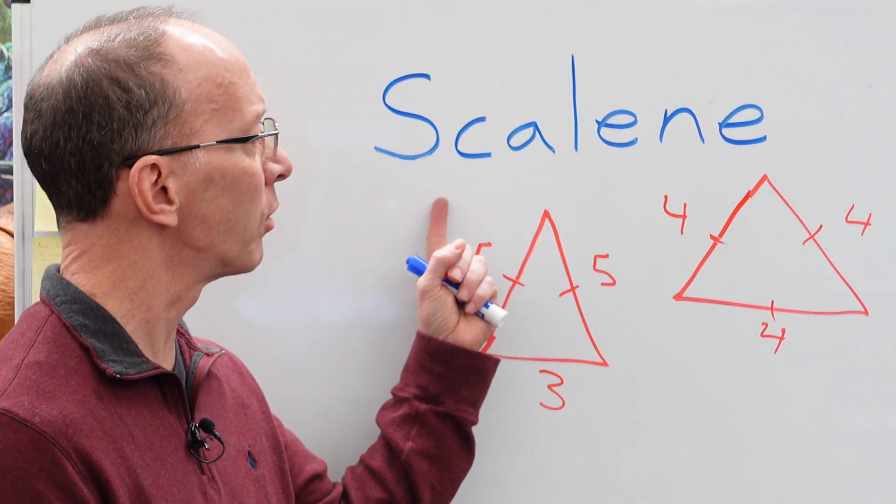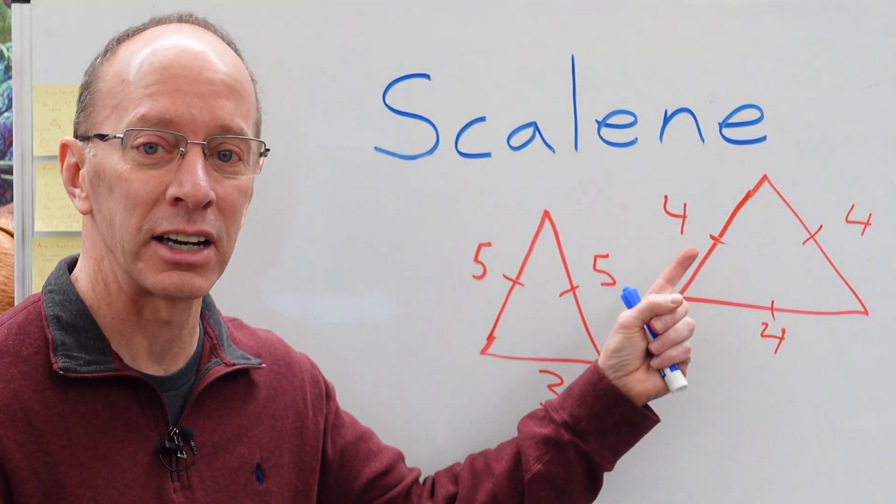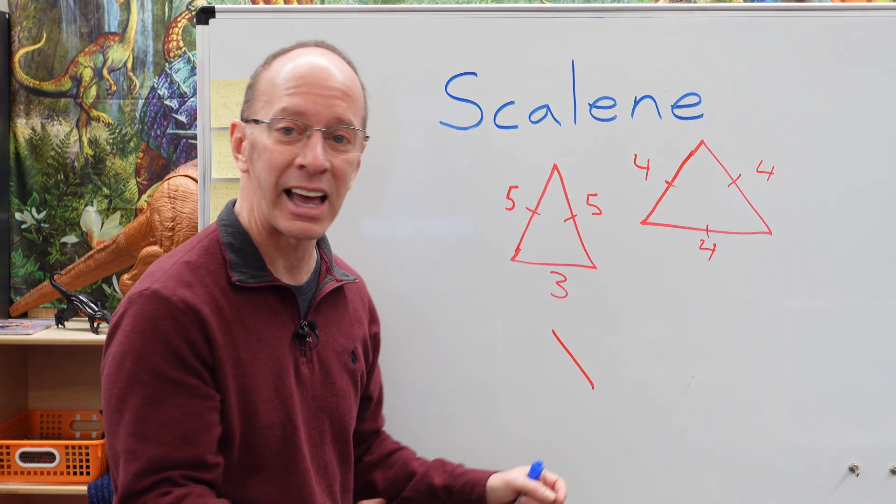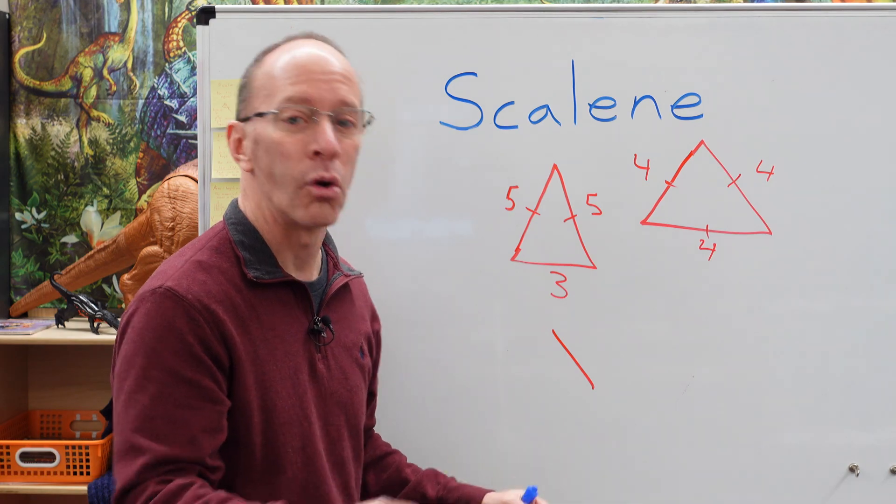But still, we didn't answer the question, what is a scalene triangle? Well, a scalene triangle is a triangle that does not have any equal sides or angles.